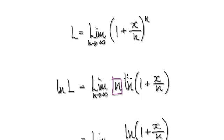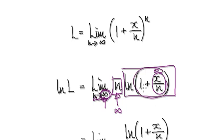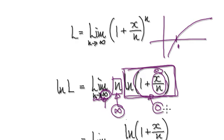Here you've got one block multiplying another block. As n tends towards infinity, this first block will be heading towards infinity. As n tends towards infinity, this part here will be zero, so you've got one plus zero, making this whole thing one. Natural log of one is zero, so this whole block will be zero. So you've got infinity times zero — this is an indeterminate form.